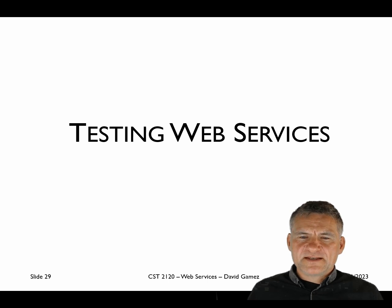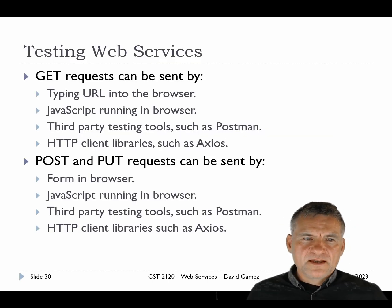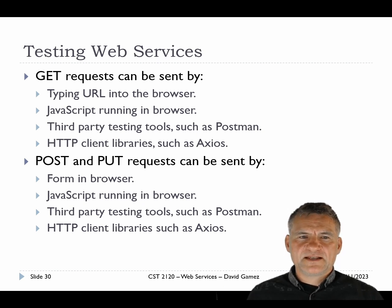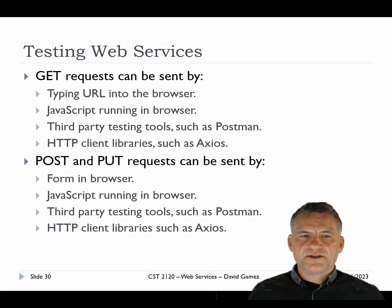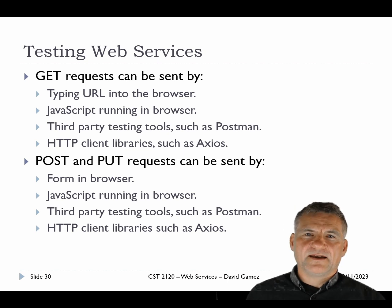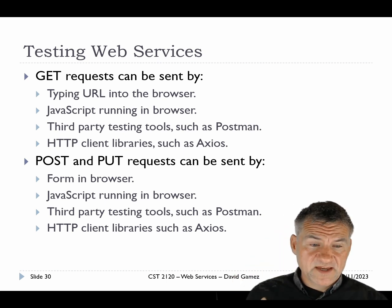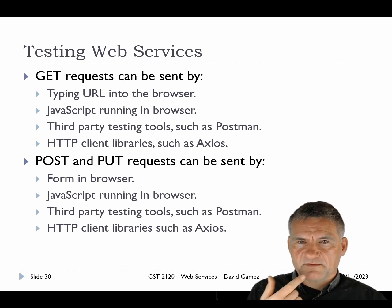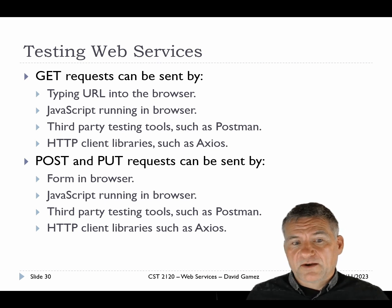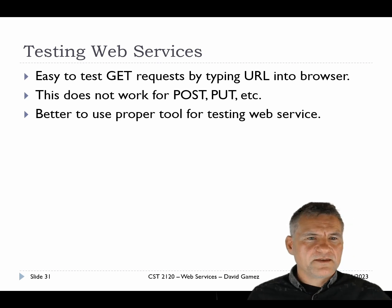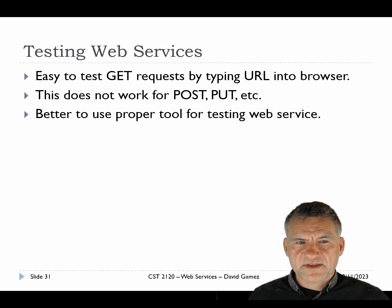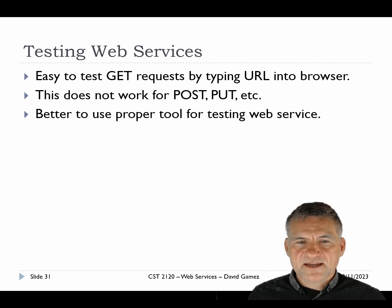Now let's talk about how we can test our web services. We can test GET requests by typing the URL in the browser, which sends a GET request to the server. We can also write JavaScript running in the browser using a method called Ajax to talk to the server, or use third-party testing tools, or HTTP client libraries in pretty much all programming languages — Axios is one I use in JavaScript running on Node. For POST and PUT requests, we need a form in the browser, which is a little inconvenient. We can also use Ajax or third-party testing tools for those.